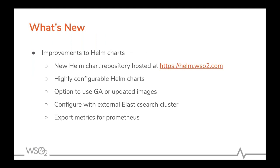We have significantly improved the WSO2 Helm charts. These Helm charts are hosted in the WSO2 Helm chart repository which can be found at this URL. These charts are created in a highly configurable manner where it is possible to choose between Docker images hosted at Docker Hub or Docker images hosted at docker.wso2.com private registry, which contains WSO2 updates. It is also possible to integrate with Elasticsearch for logging and Prometheus for monitoring.